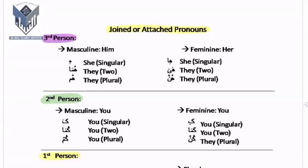The attached pronouns will also be discussed considering three persons: first, second, and third. For the third person masculine singular, we say 'hu' meaning he. For the dual, 'huma' meaning they two, masculine. For the plural masculine, 'hum' meaning they. As for the feminine, 'ha' means she — singular feminine — and it is attached to the noun itself.